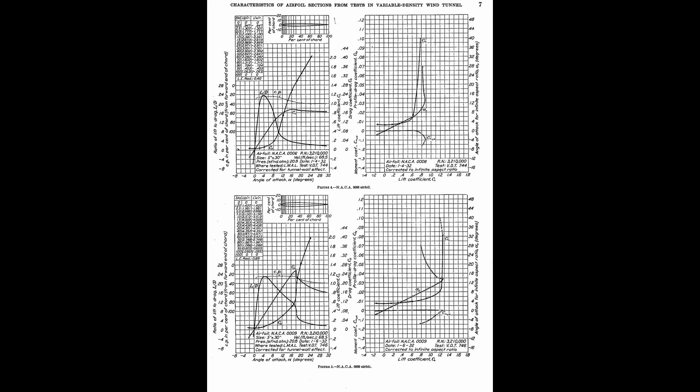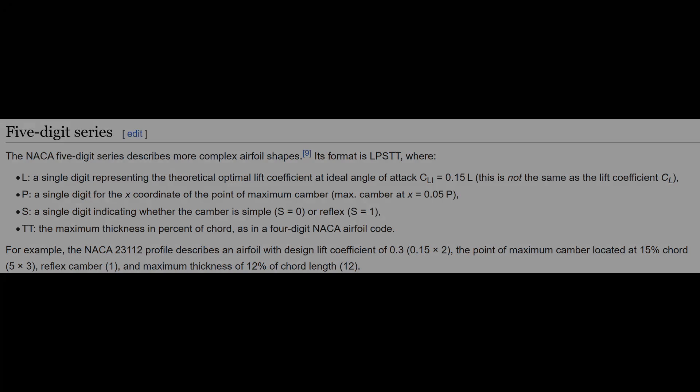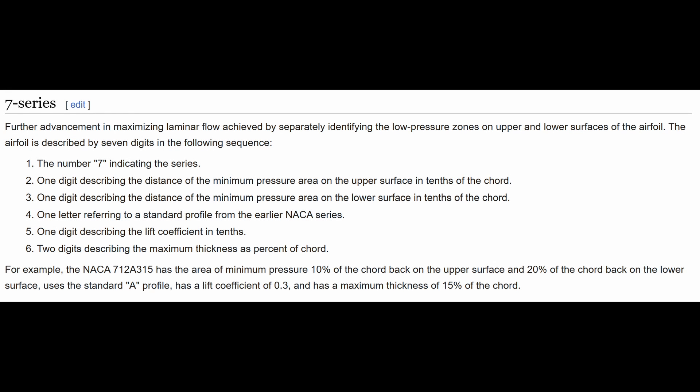There are ways to find the lift coefficients for these airfoils mathematically, but it's not easy and they're pretty much the same method as any other arbitrary airfoil. This four series was made in the early 1900s and the later series included digits and equations to help predict these coefficients more effectively. Take the five series — the first digit gives the theoretical optimal lift coefficient at an ideal angle of attack. A more modern series such as the seven series has digits to describe the location of minimum pressure area of the upper and lower surfaces, along with the lift coefficient.